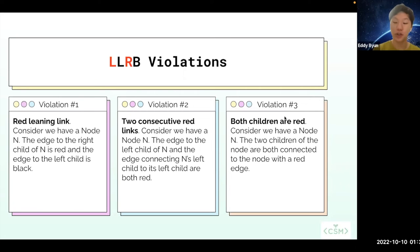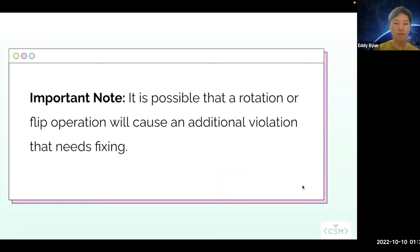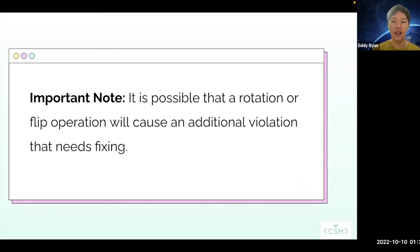Violation number three happens when both children are red. So consider we have a node n and the children of the node are both connected to it with a red edge. So those are the three violations for an LLRB. To fix the first violation, we rotate left on n. For the second violation — two consecutive red links — we rotate right on n. And for the third violation — both children are red — we color flip on n. An important note is that it is possible that a rotation or a flip operation will cause an additional violation that needs fixing. So just because you do a rotate right, rotate left, or a color flip doesn't mean the resulting tree is completely fine.